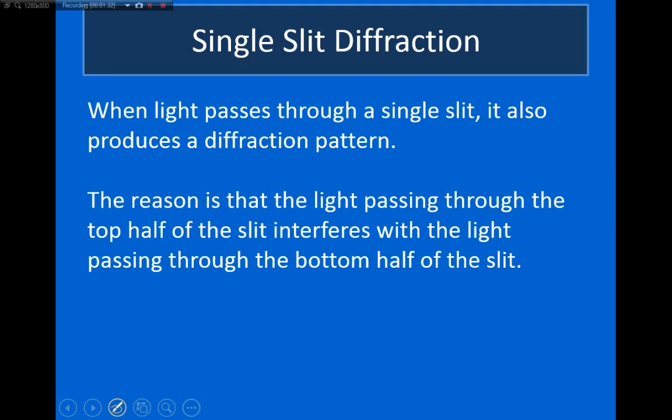Now, we can also get an interference pattern when light passes through just a single slit. The reason that this occurs is because the light that passes through, say for example, the top half of the slit, can travel a different distance to the screen than the light that passes through the bottom half of the slit. As a result of this, we can still have an interference pattern that occurs.